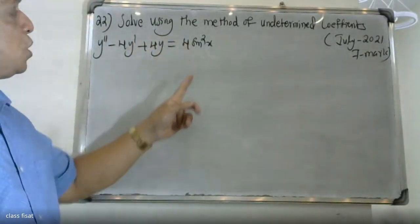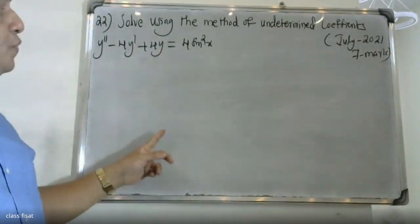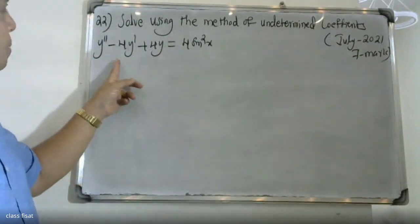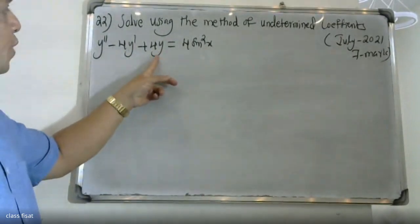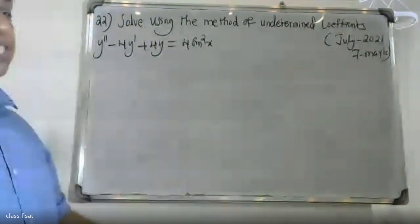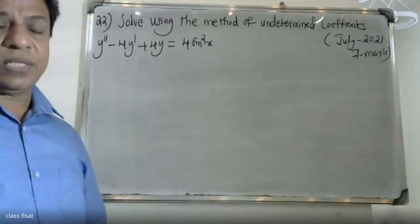Using the method of undetermined coefficients, solve y'' - 4y' + 4y = 4sin²x.